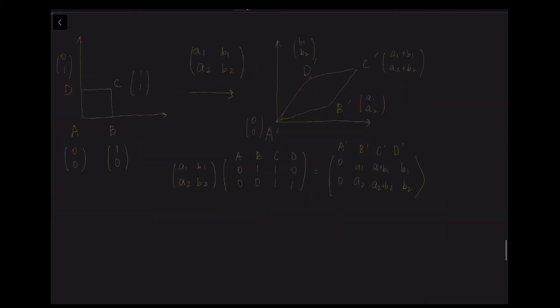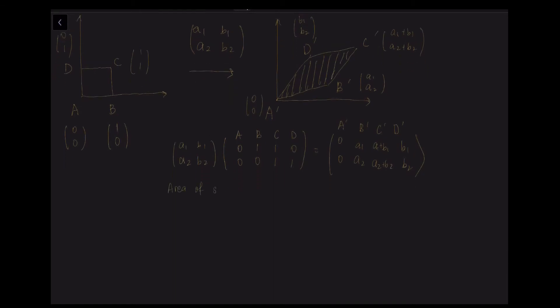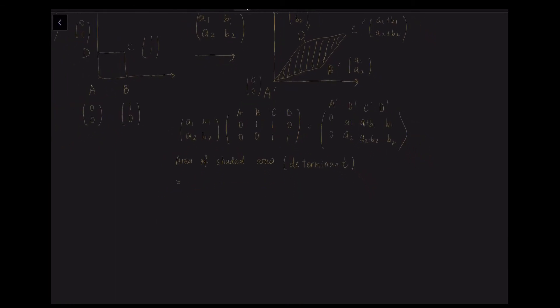So what does determinant represent? It represents the new shaded area of the region A prime, B prime, C prime and D prime. We can obtain the determinant geometrically by calculating the area of the parallelogram. This is the proof.